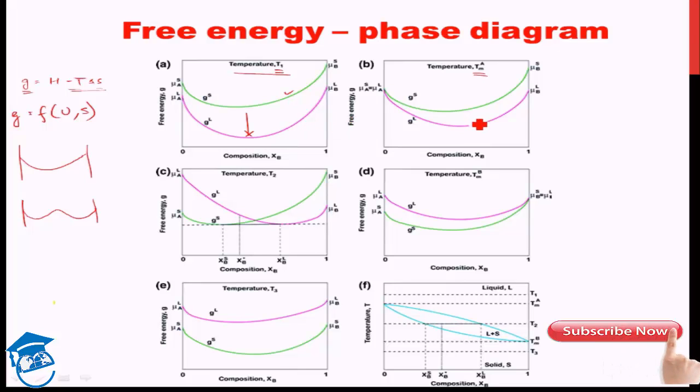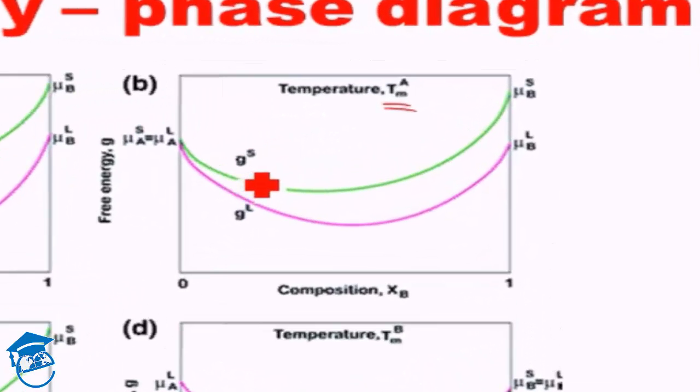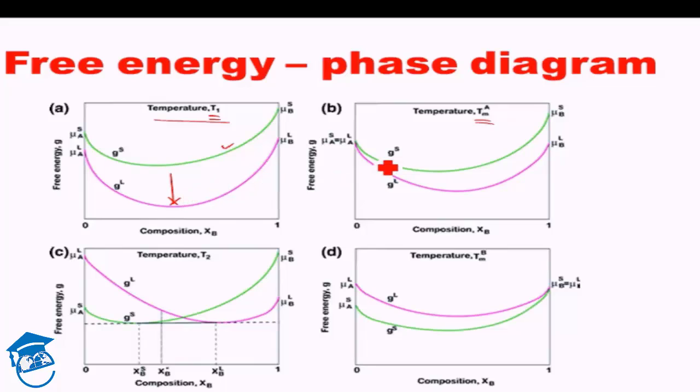What we see here is that the free energy of S, the solid, has come much closer to the free energy of the liquid. There was a lot of difference before. In fact, the free energy of solid and liquid meets at one single point for temperature TMA. That is at 100% A - they both meet. What this means is that at 100%, both phases will coexist, the liquid and the solid. But at any other composition, liquid will again be the stable phase. Solid has higher free energy, so that is not the stable phase.